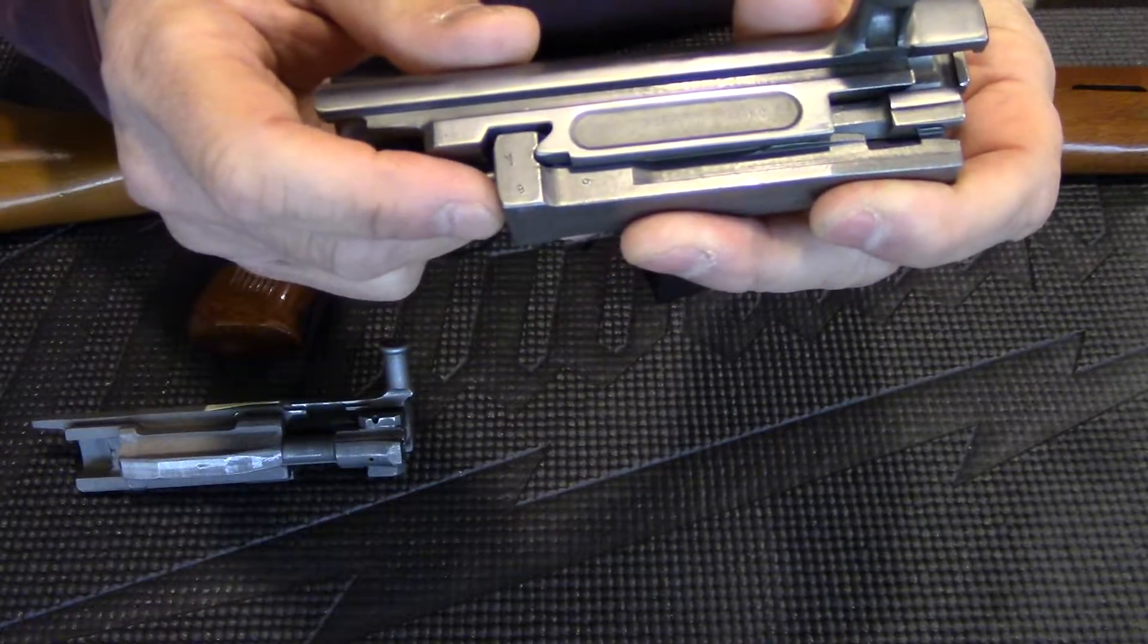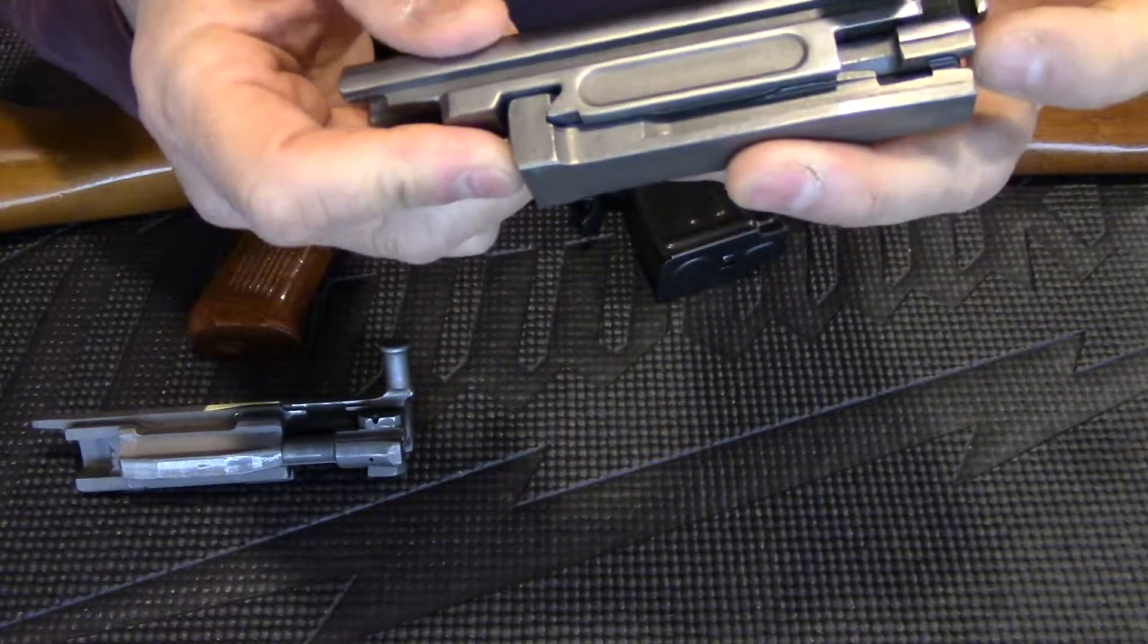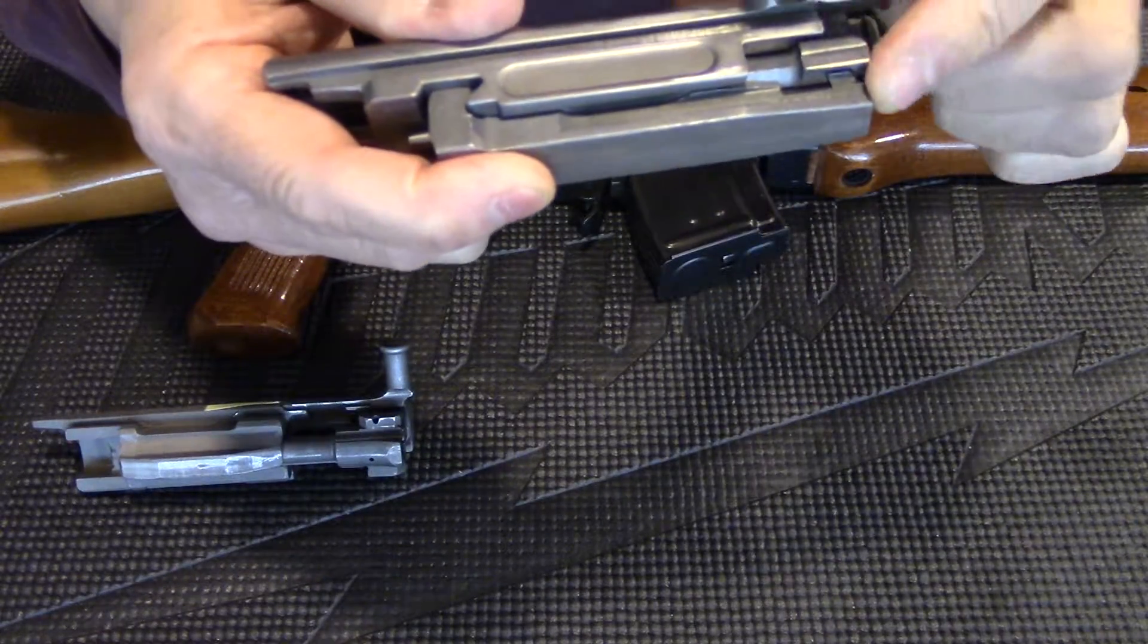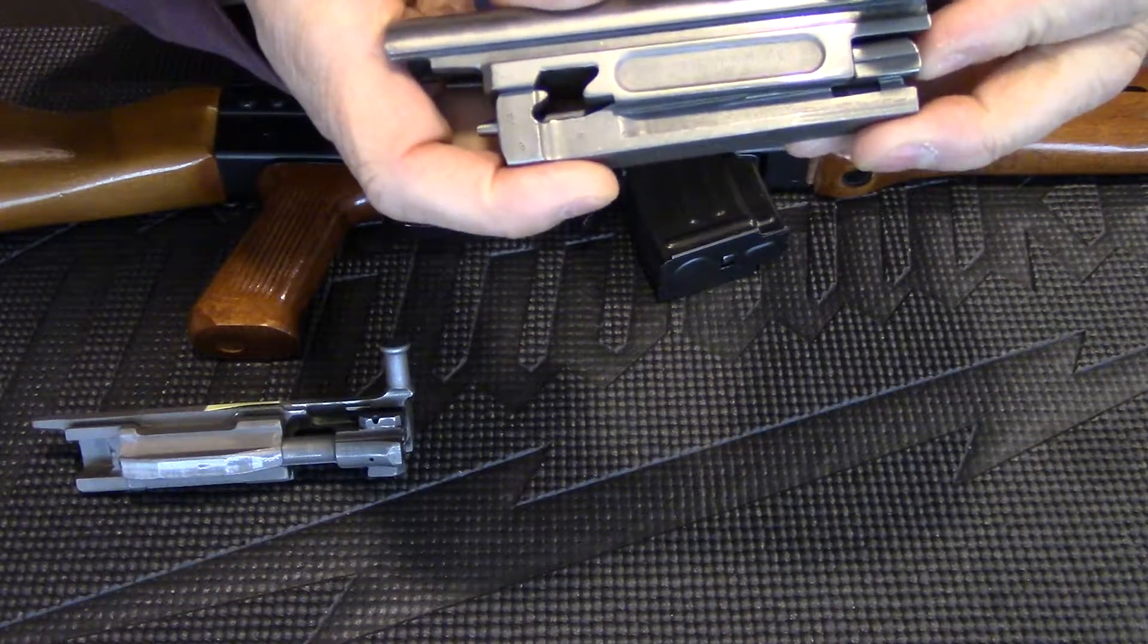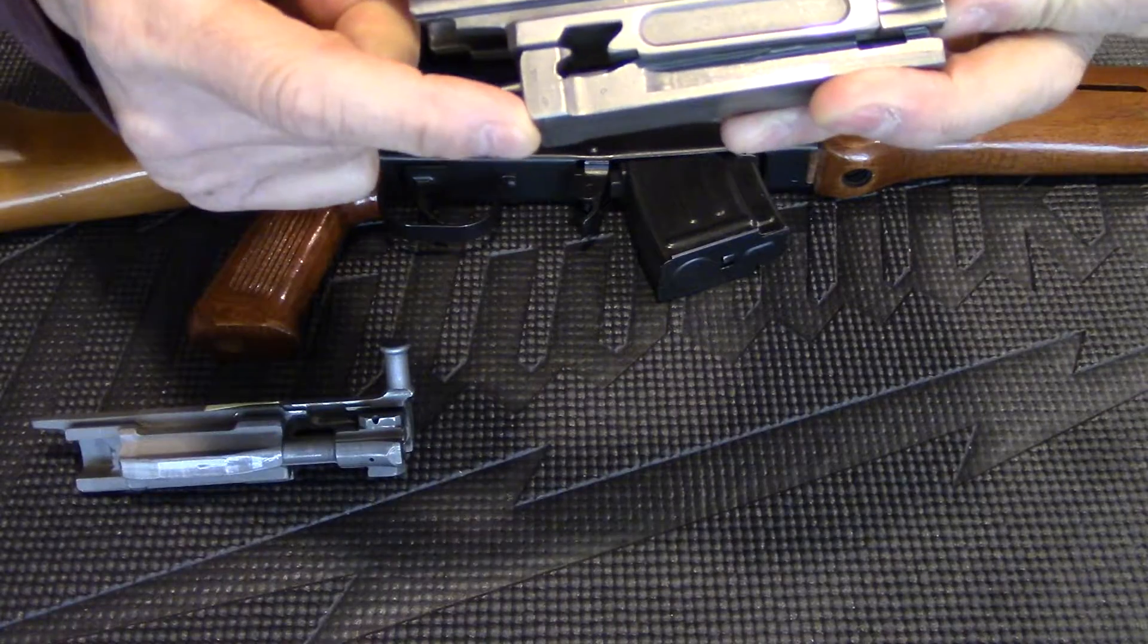It's called the tilt locking mechanism. When the bolt face reaches the chamber face, it's forced down by the carrier and locks in place.